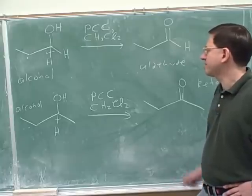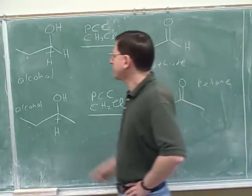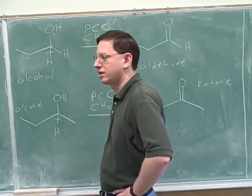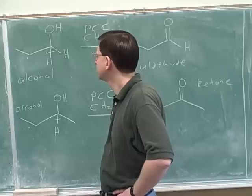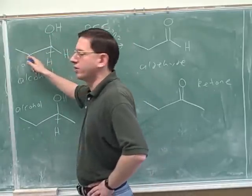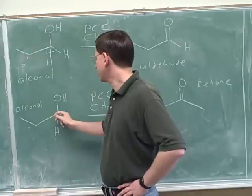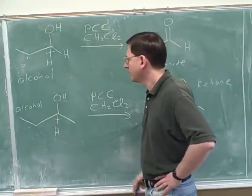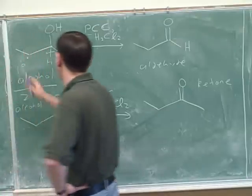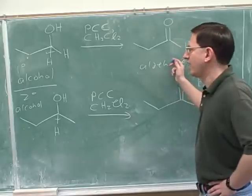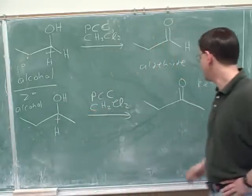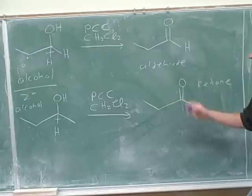So why does an alcohol sometimes give you an aldehyde and sometimes a ketone? What type of alcohol is this — primary, secondary, or tertiary? Primary, because the alcohol carbon is attached to only one carbon chain. But what type is this one on the bottom? Secondary, because the alcohol carbon is attached to two carbon chains. So a primary alcohol oxidizes to an aldehyde because an aldehyde only has one carbon chain, and a secondary alcohol oxidizes to a ketone because a ketone has two carbon chains.